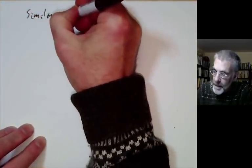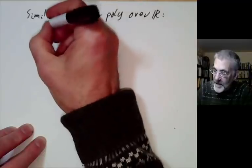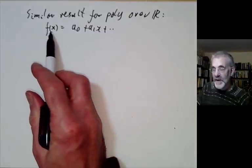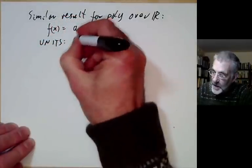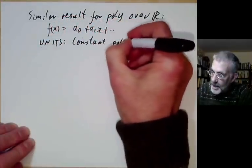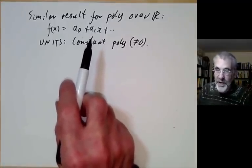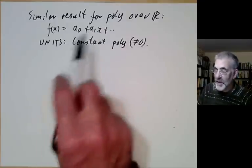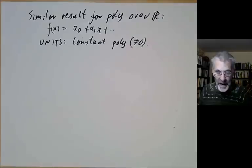We can give a similar result for polynomials over the reals or any other field. If f(x) = a0 + a1·x + ..., we can talk about polynomials being prime if they can't be written as a product of polynomials of smaller degree. The units here are the nonzero constant polynomials. Any nonzero polynomial can be written as a product of irreducible polynomials and constant polynomials, unique up to order and multiplying by constants. The proof is essentially the same as for integers.